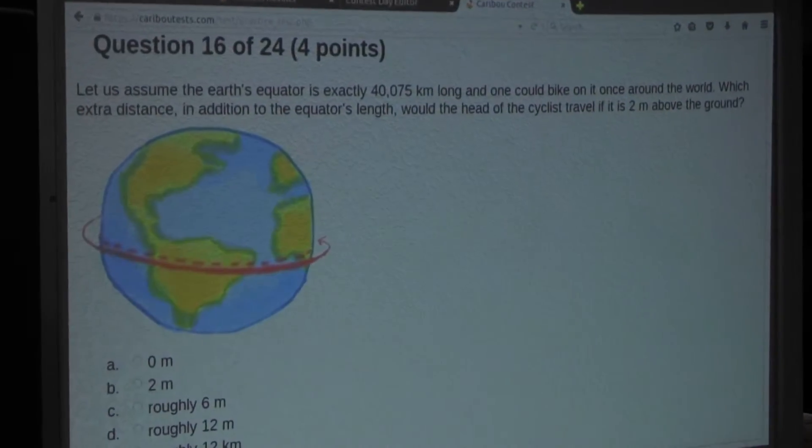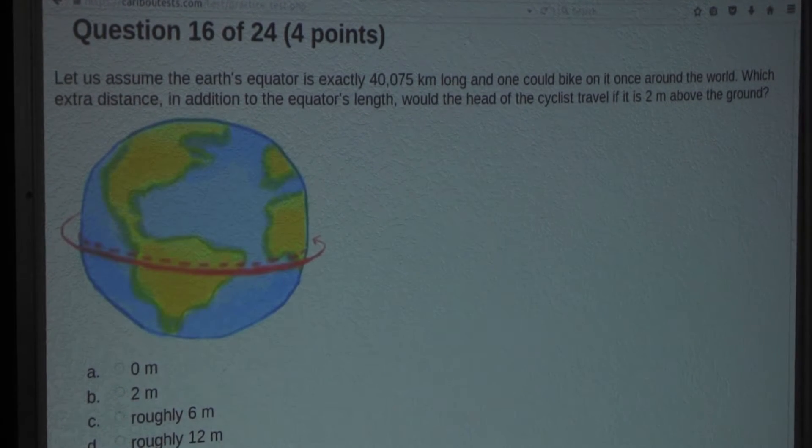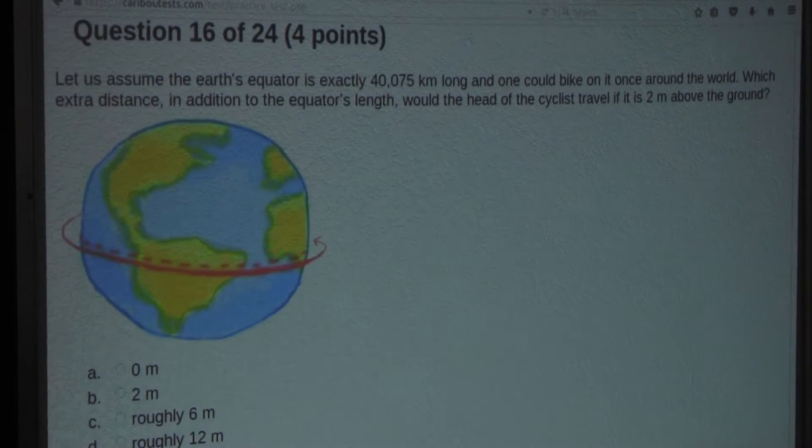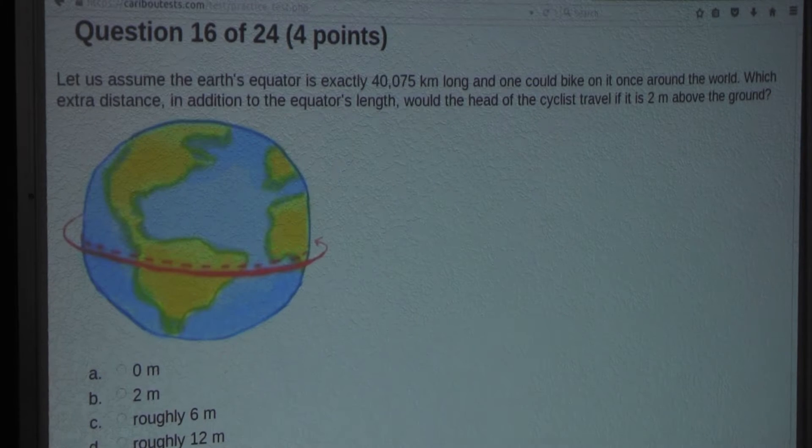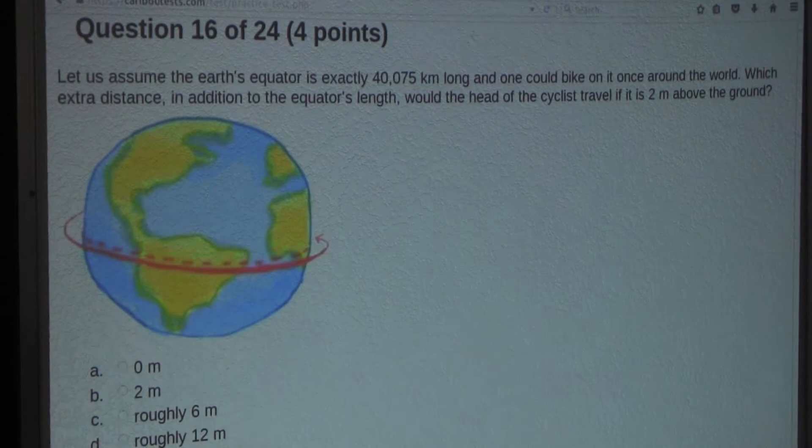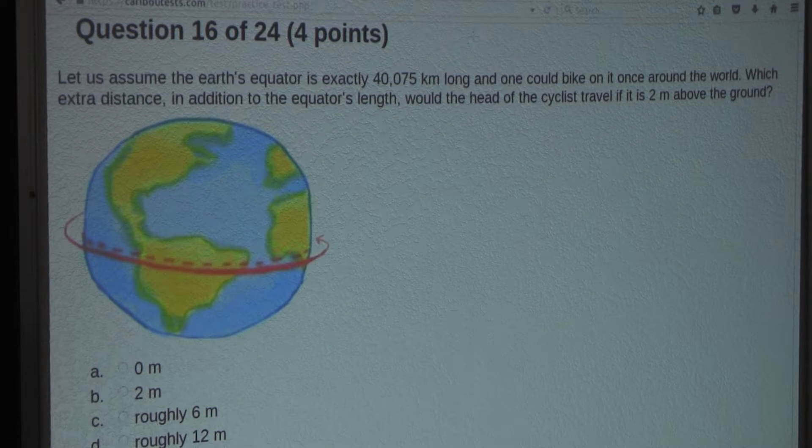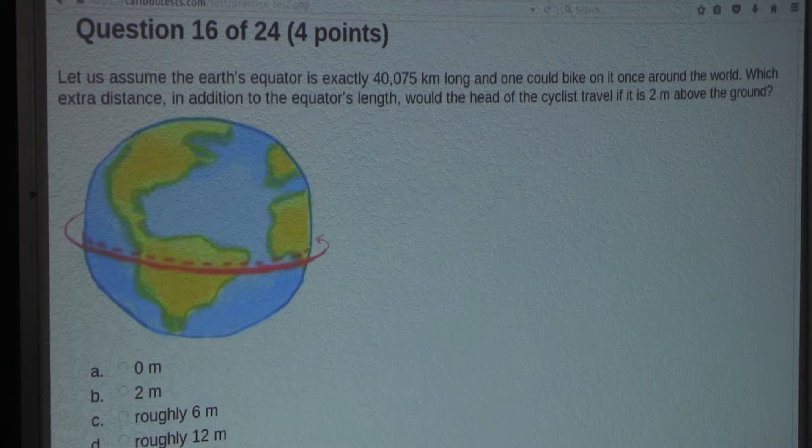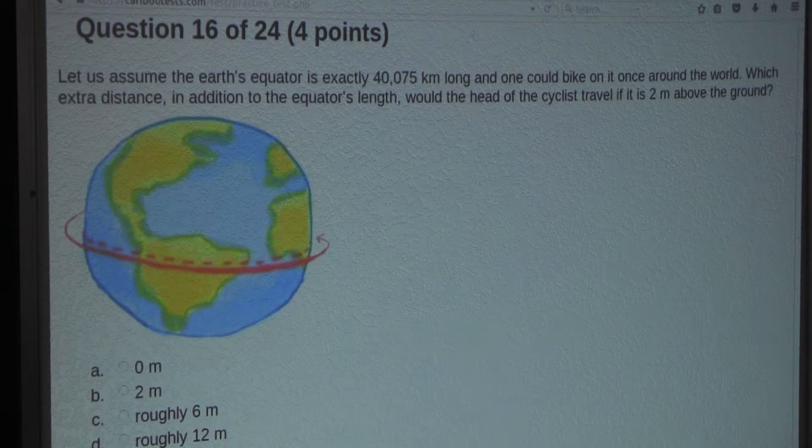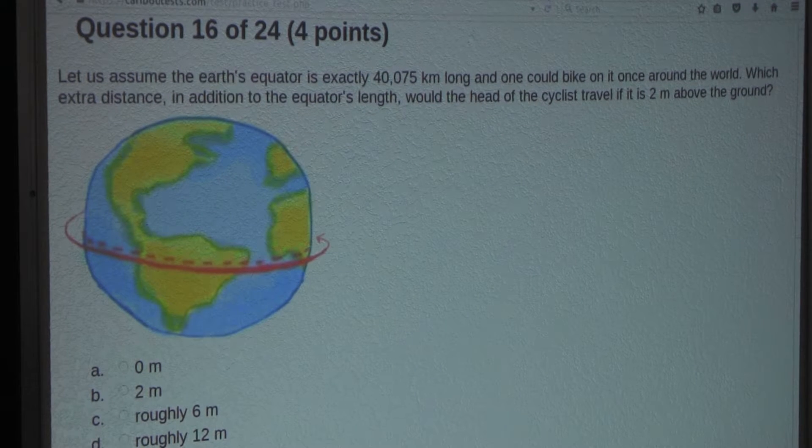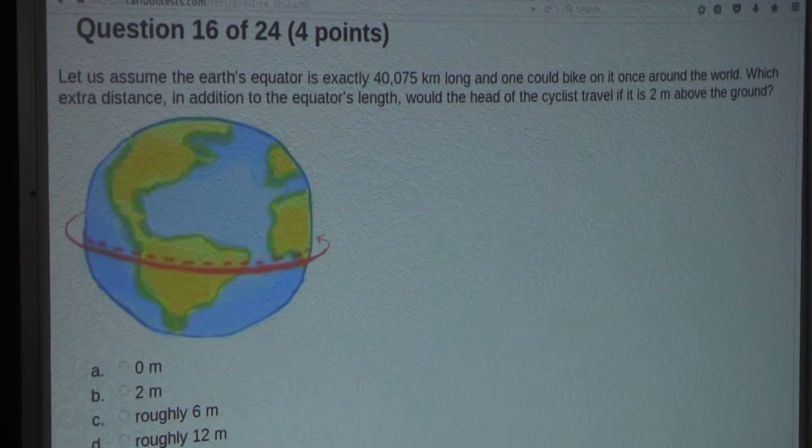So the question is, let us assume the Earth's equator is exactly 40,075 kilometers long, and one could bike on it once around the world. Which extra distance, in addition to the equator's length, would the head of the cyclist travel if it is 2 meters above the ground?